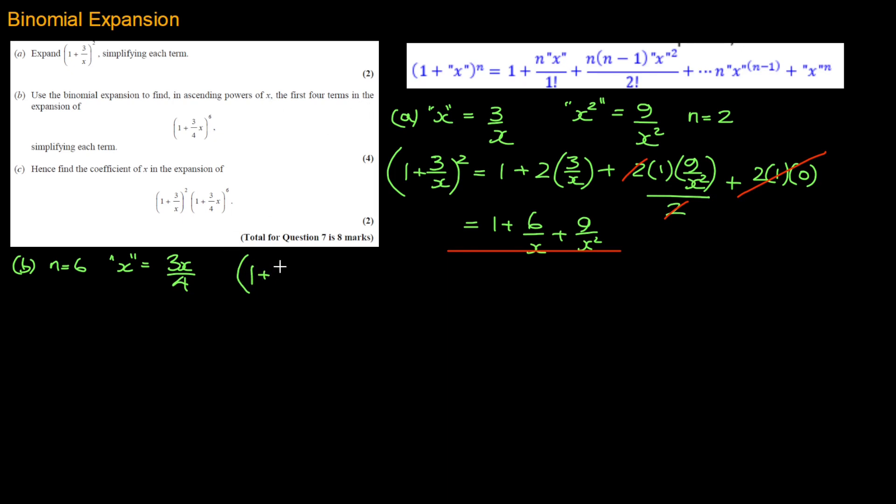So (1 plus 3x over 4) raised to the power 6 will be equal to 1 plus n times x over 1, so this is 6 multiplied by 3x over 4. And I'm not going to bother about the divide by 1. So 1 plus n, 6, 5. Now this term squared, which is 9x squared over 16. Oh and I forgot the divide by 2 because of 2 factorial underneath.